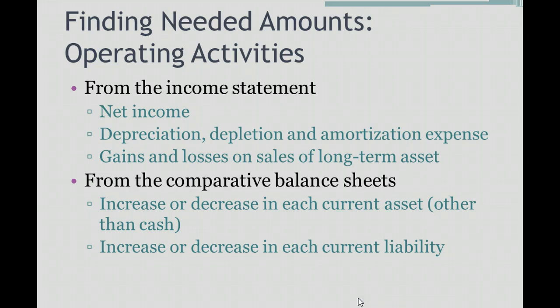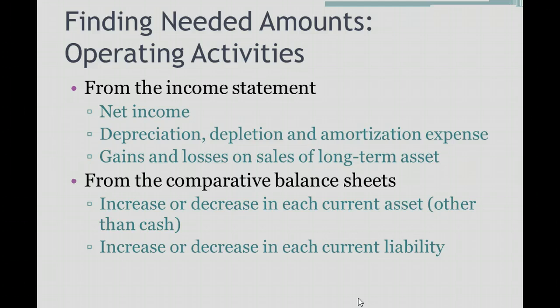Now let's look at what we need from the balance sheet. We look at the comparative balance sheet, which means we have balance sheets for two years — say 2011 and 2012. From the comparative balance sheets, we need to look at any increase or decrease in each current asset, ignoring cash. Current assets include accounts receivable, inventory, and so on — we ignore cash but examine each other current asset. We also look at the increase or decrease of each current liability.